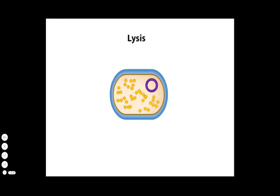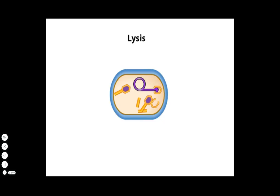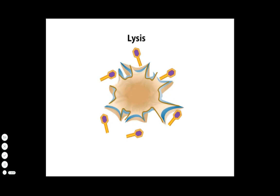The cell replicates the lambda phage DNA by a rolling circle method, making many copies that become packaged into the capsids. A phage enzyme then lyses the cell and the progeny phage spill out, ready to infect another host cell.